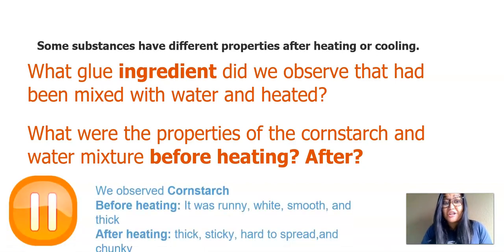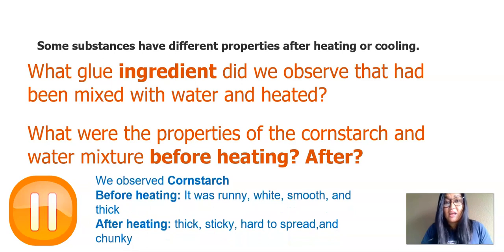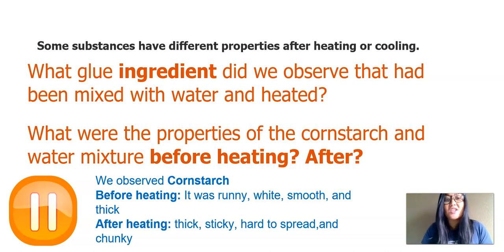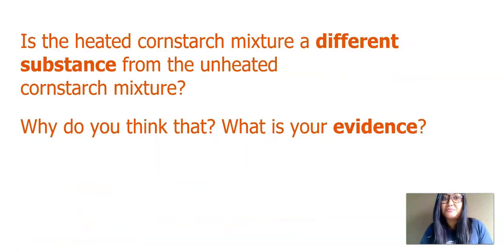Here's what I wrote down. We observed cornstarch. Before heating, here were the properties: it was runny, white, smooth, and thick. After heating it, it was thick, sticky, hard to spread, and chunky. I'm wondering if you also wrote down these same properties or different ones that we can add on.